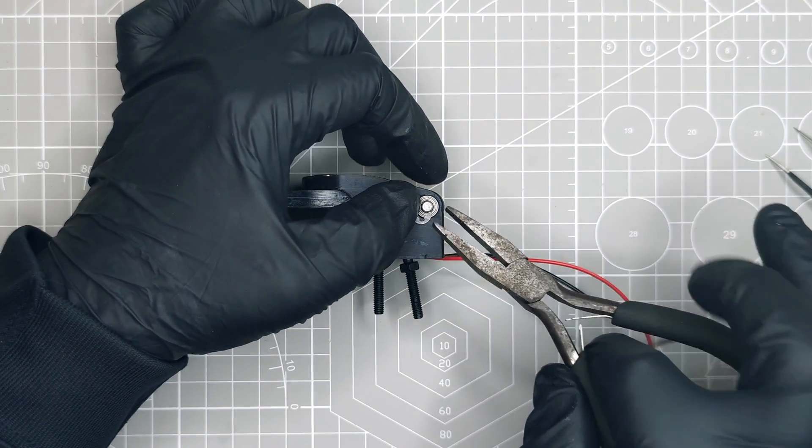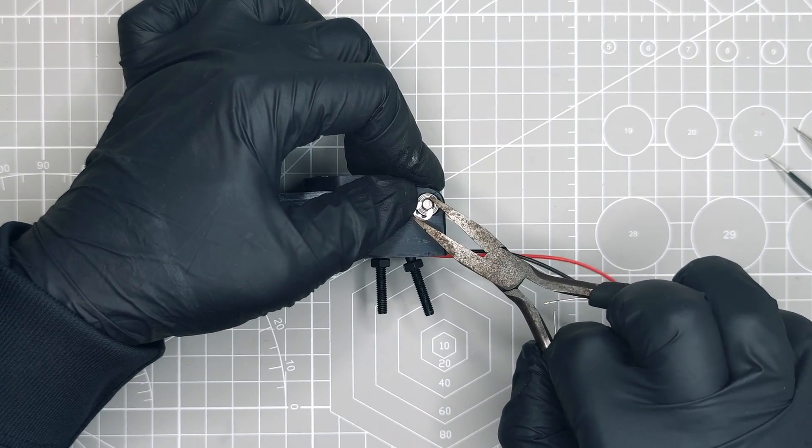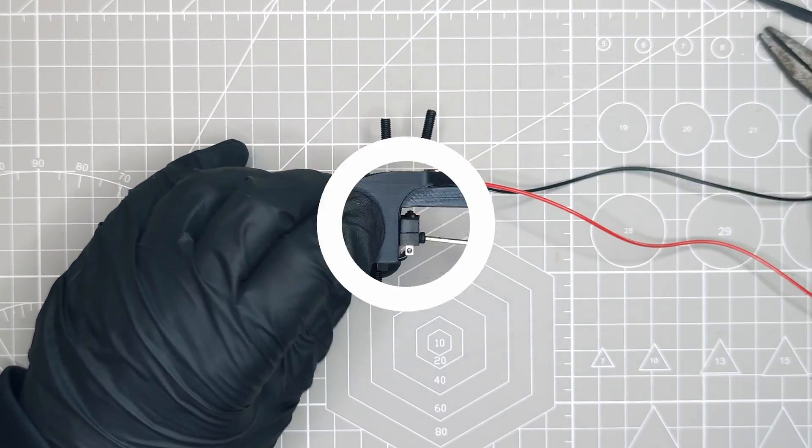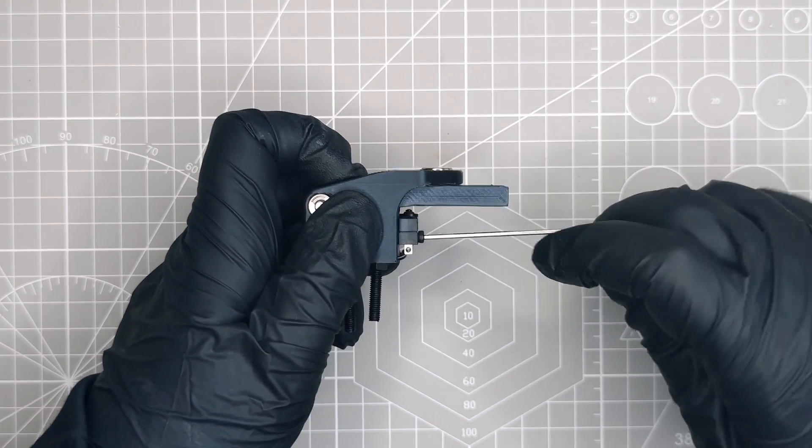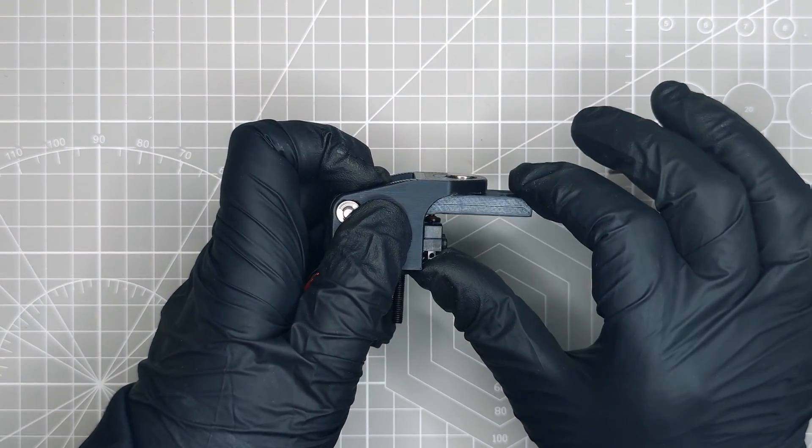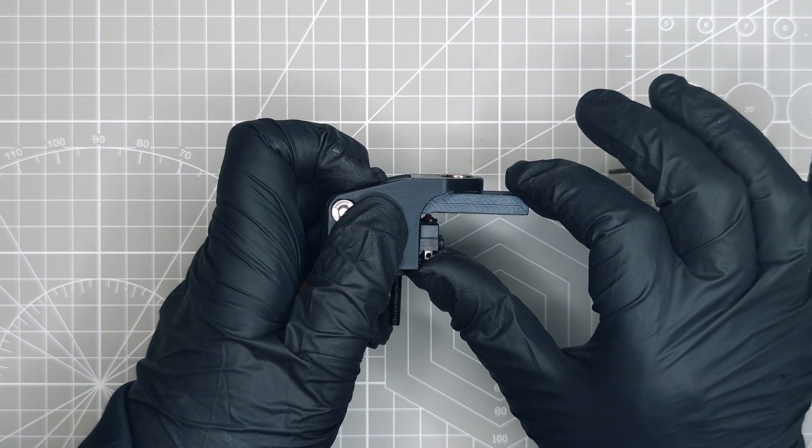We can now install the circlips to secure the ball bearings on each side. One for the left and one for the right. Finally, I can align the switch perfectly with the lever, making sure the switch is engaged when the lever is fully pressed. This is looking good.